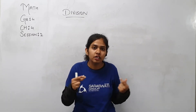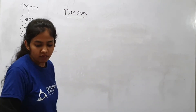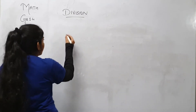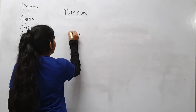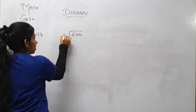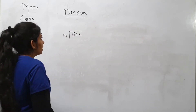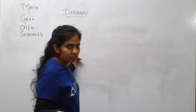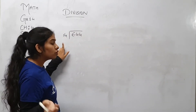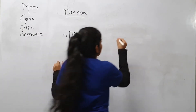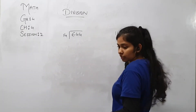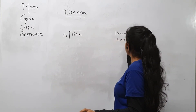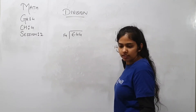So if I say that you are supposed to divide 644 by 14. So 644, you have to divide it with 14. Here we have two digits, so we are supposed to take two digits only. So you must know the table of 40. 40 ones are 40, 40 twos are 80, 40 threes are 42.